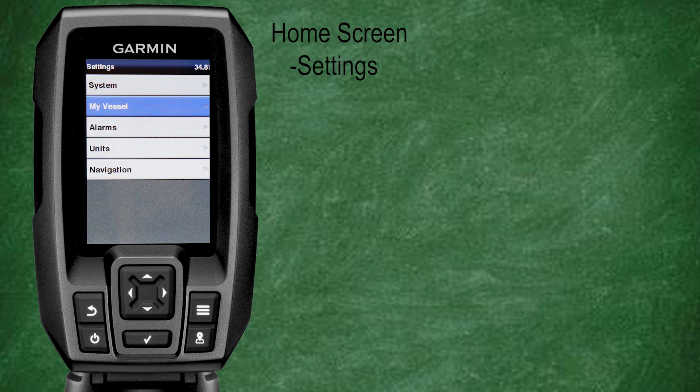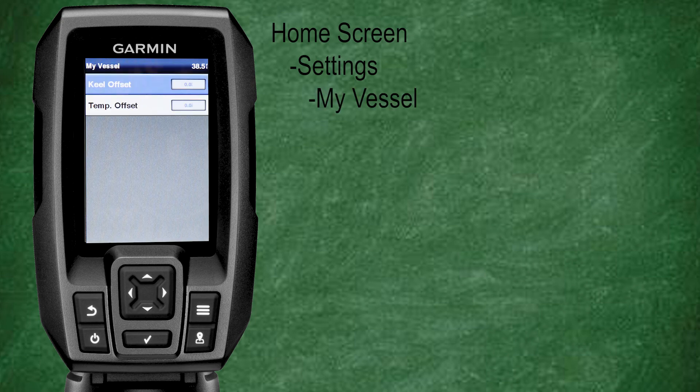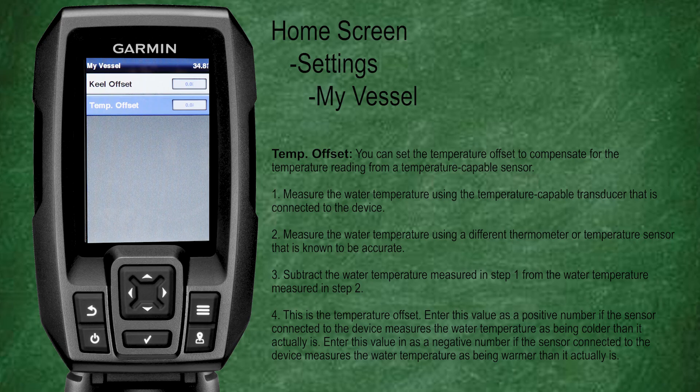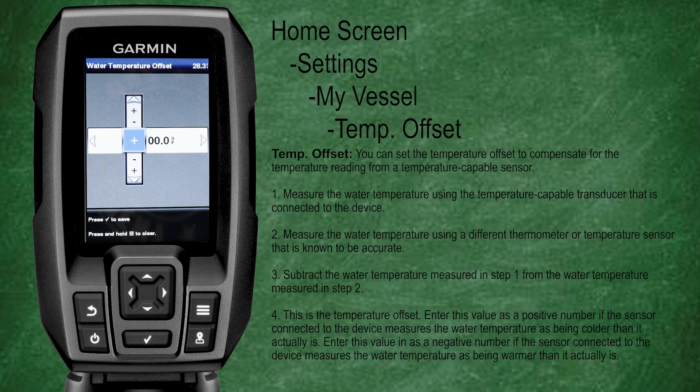Now we're going to move along to adjustable vessel settings. Under My Vessel in the settings menu we see two options: keel offset and temperature offset. The keel offset adjusts the surface reading from the transducer for the depth of a keel, making it possible to measure depth from the bottom of the keel instead of the transducer's mounting location. The temperature offset allows you to use a known good water temperature reading and adjust the Garmin Striker's output to match, giving you pinpoint water temperature accuracy.